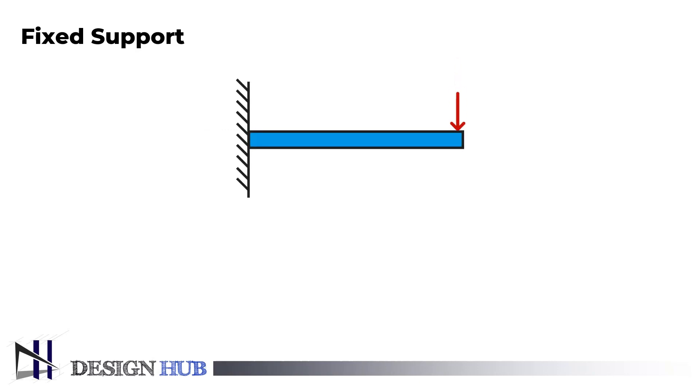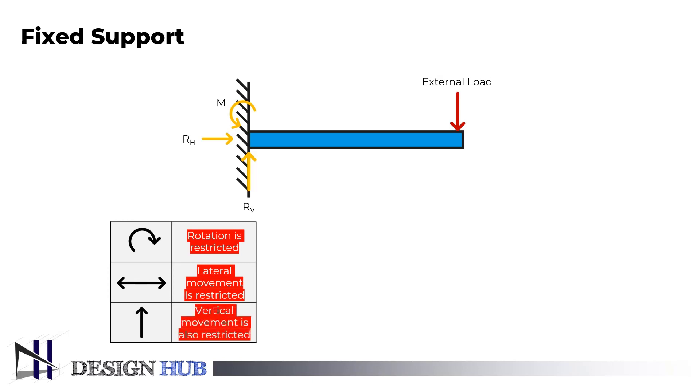Next, we'll look at fixed or rigid support. Any kind of movement is constrained by this support. Therefore, all three reactions, a moment, a horizontal reaction, and a vertical reaction, will be visible. Cantilevered beams or concrete frame structures both use this kind of connection.